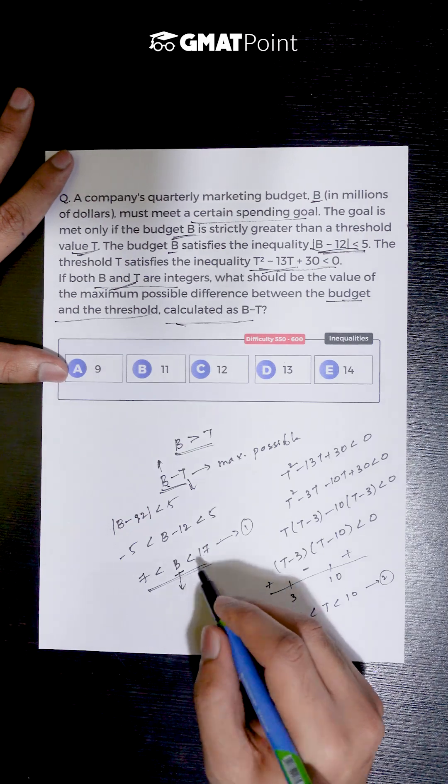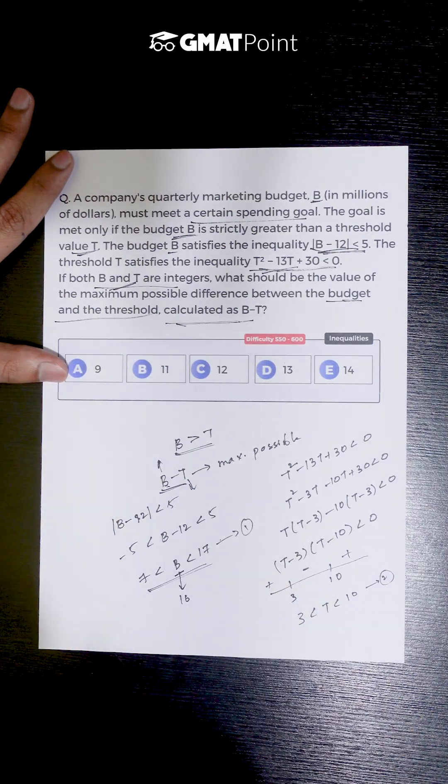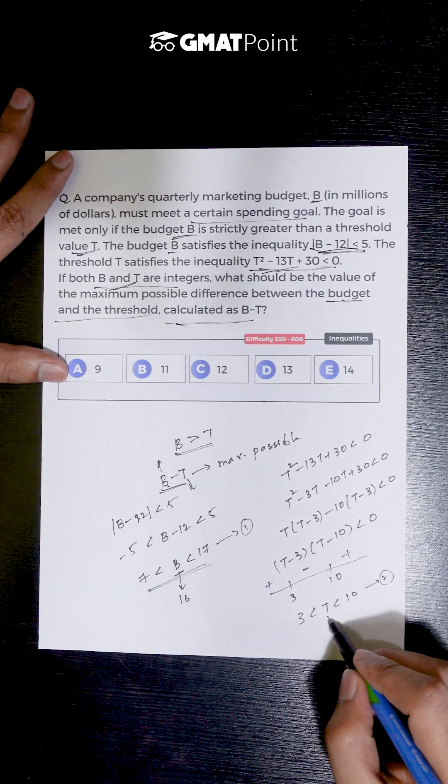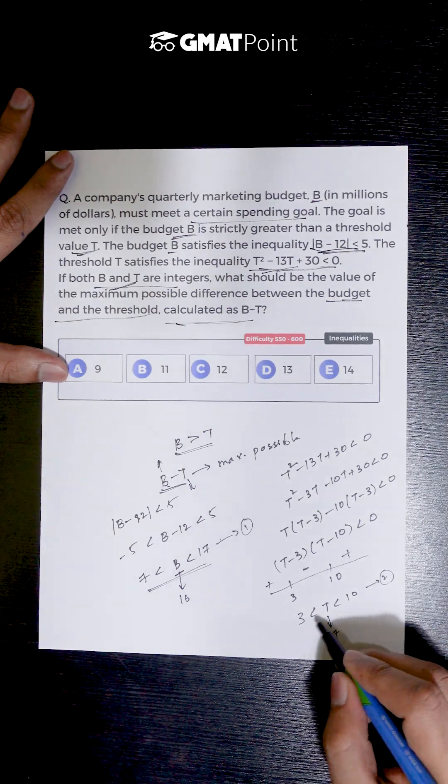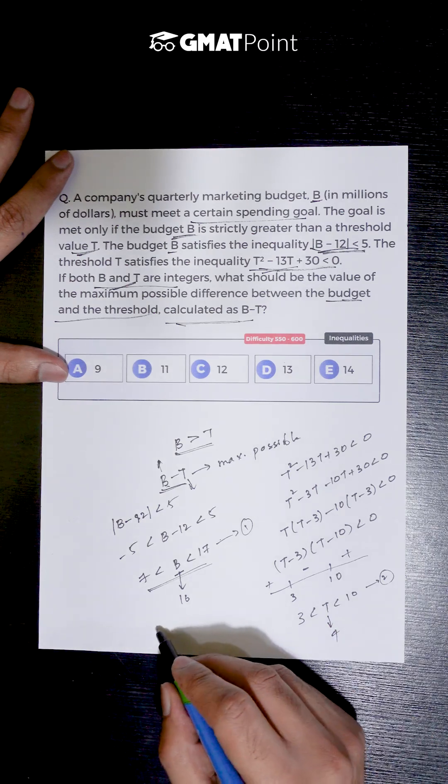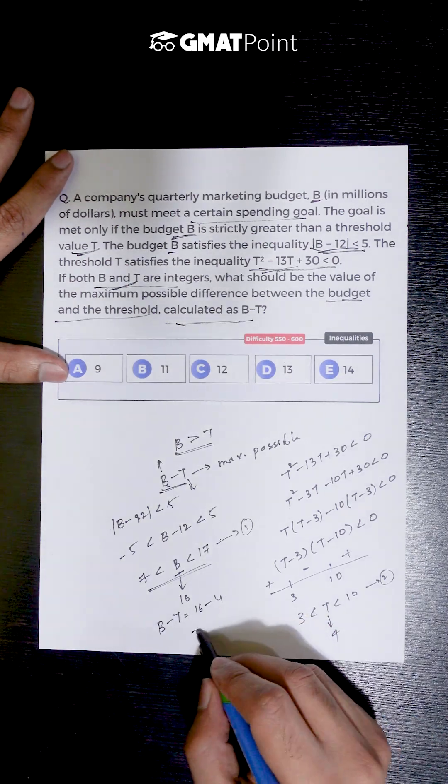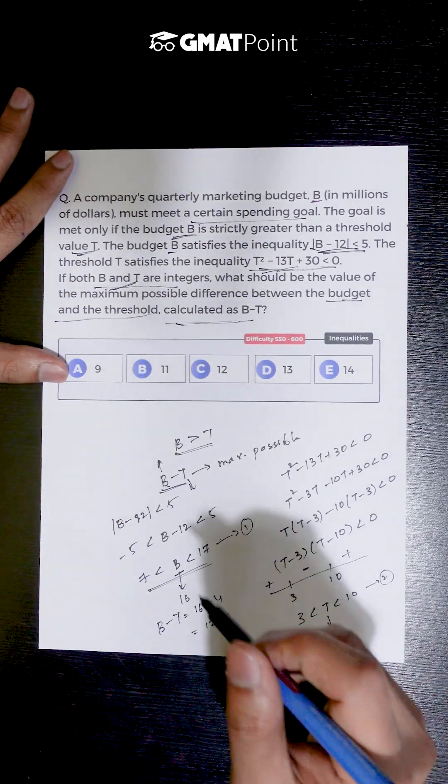So the maximum possible value for B is 16, because we are given that B < 17, and the minimum possible value for T is 4, because we are given that T > 3. So the maximum possible value of B - T is nothing but 16 - 4, which equals 12. Therefore, the correct answer is option 12.